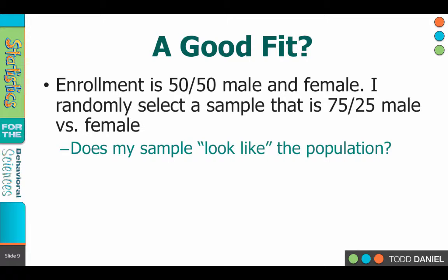Let's say that we have a college in which there is a 50-50 male-female enrollment. Now I do some kind of sampling and I find out that my sample has a 25-75 split with males and females. Is that a good fit? So what you would expect is that any sample would have a 50-50 split of male-female. Does the 75-25 split fit? Does it look like the population?